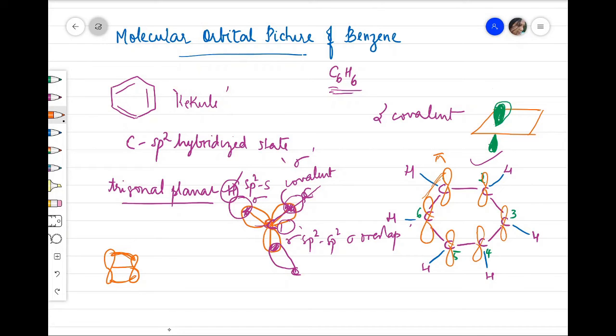What is the angle? Because it is trigonally planar, each angle is 120 degrees. It is a flat molecule. This has been confirmed by X-ray and electron diffraction studies - the orbital picture has been confirmed by X-ray and diffraction studies.